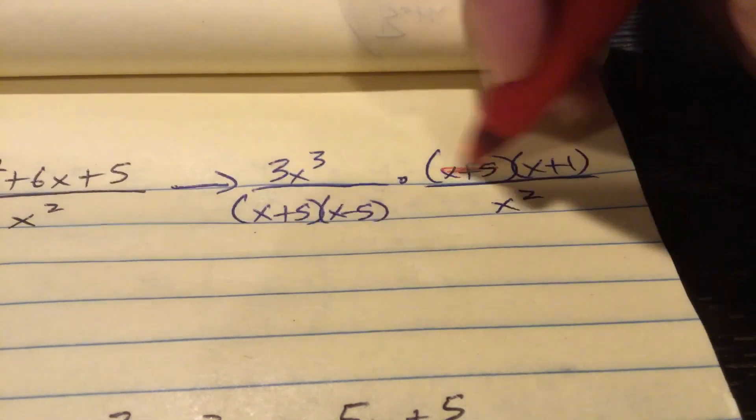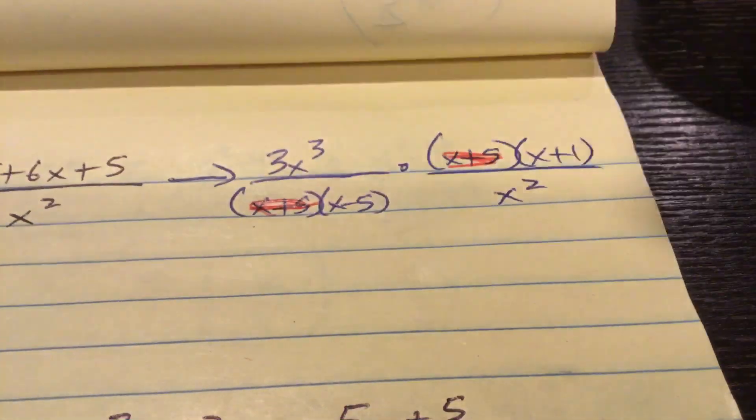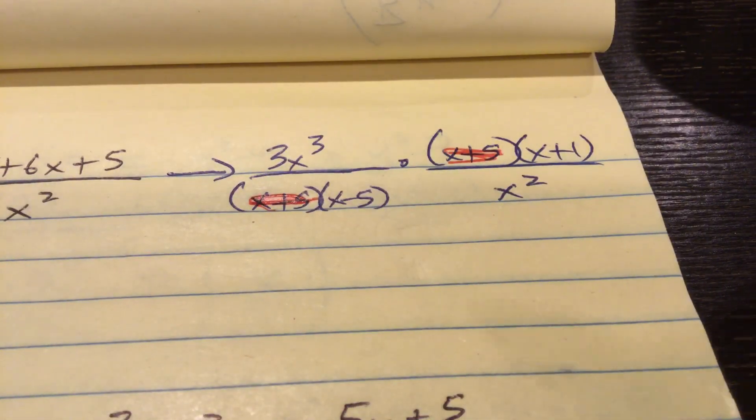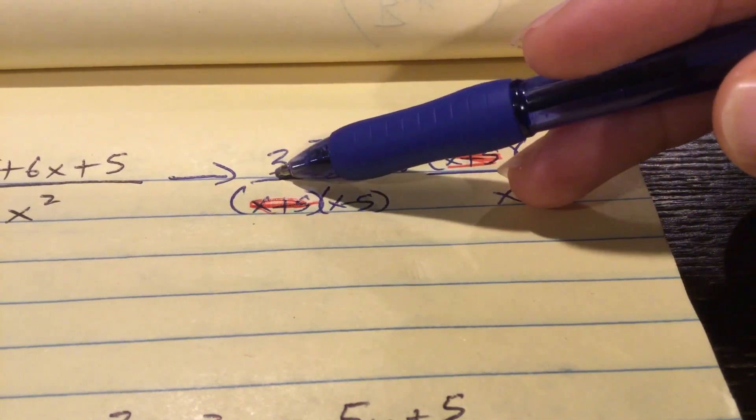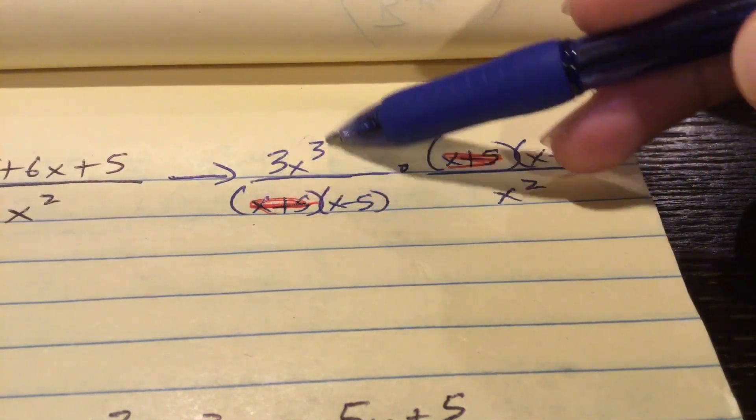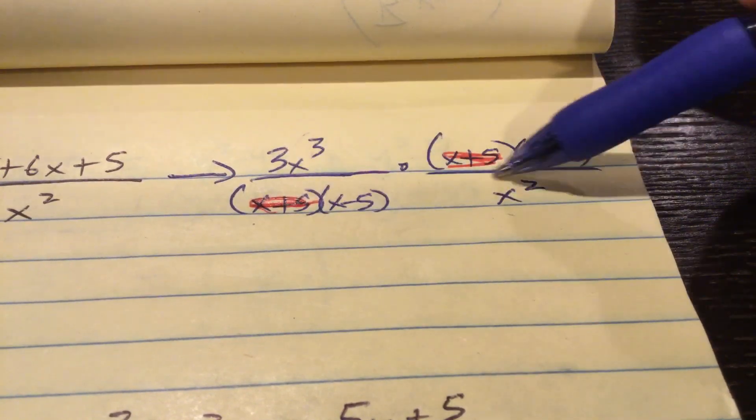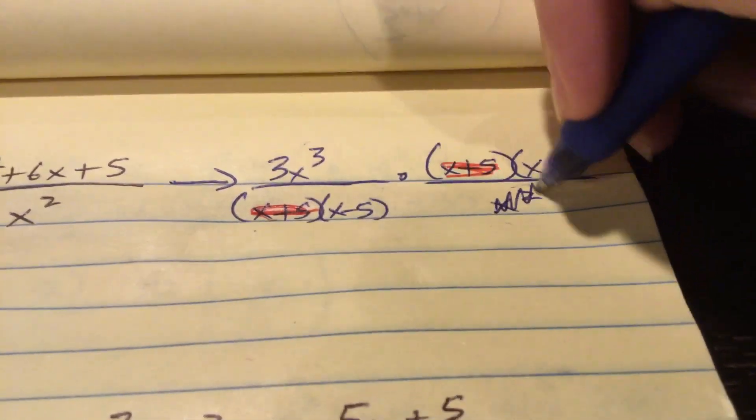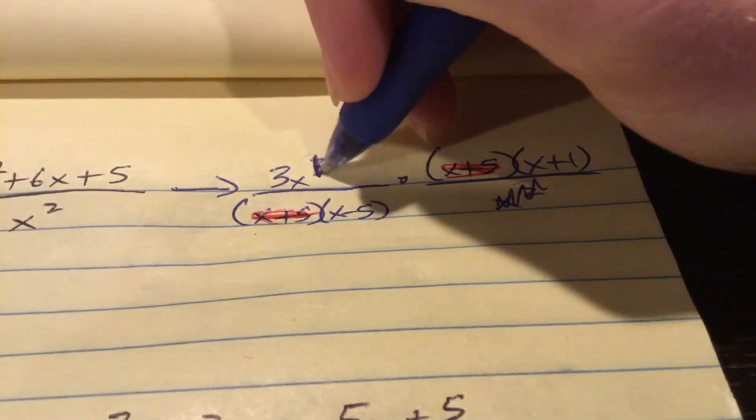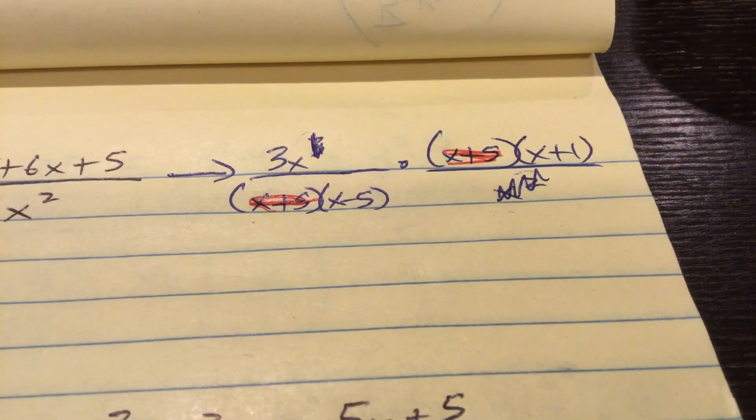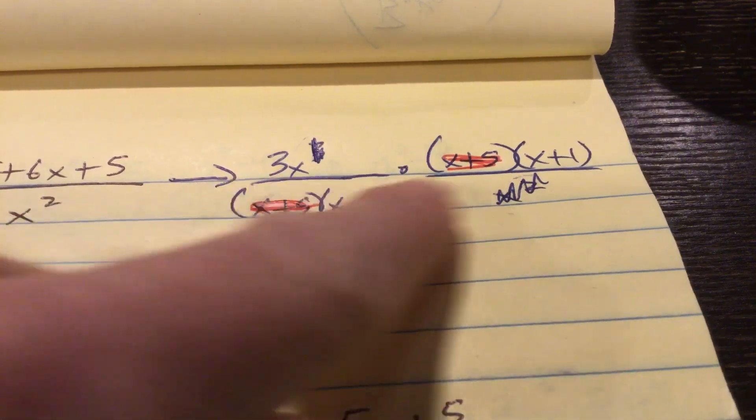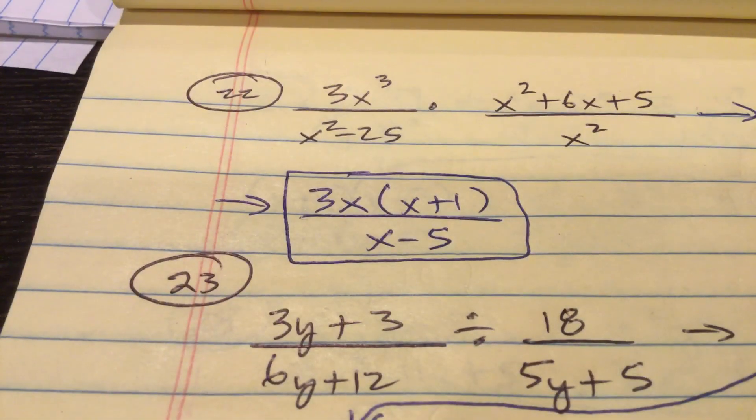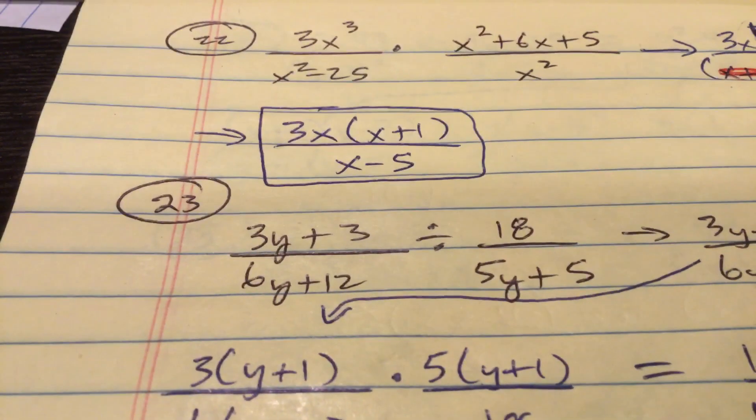So first off, the x plus 5 will cancel. Alright. The x plus 1 is going to remain. The x minus 5 is going to remain. But look, you have, don't worry about the 3 on the outside. That 3 is going to remain as well. This is 3x's here, x to the third. And that's 2x's. So they will cancel. You're going to take 2 away from the top. Okay. You can divide them both by x squared. So the one thing that remains in the denominator is x minus 5. Up top, you're going to have 3 times x times x plus 1 over x minus 5.